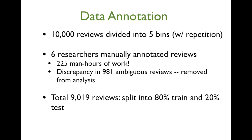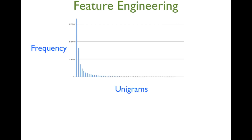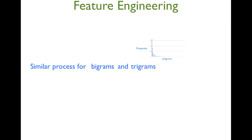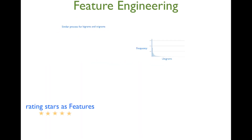Our next task was to extract the features. We first chose unigrams based on their frequency. We also handpicked many unigrams based on our intuition. At the end of this exercise, we had 375 unigrams. We followed the same process to extract bigrams and trigrams, and included star ratings as part of our feature set.